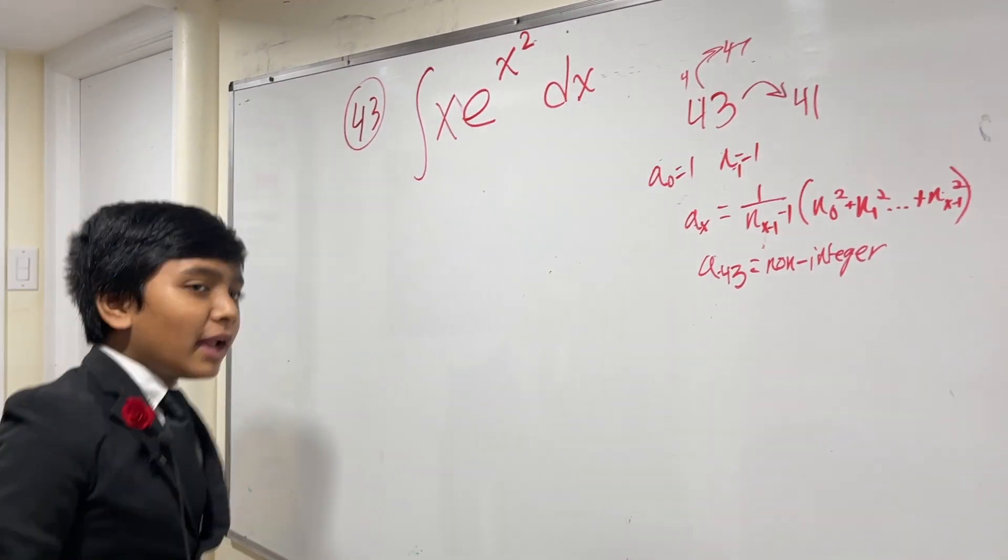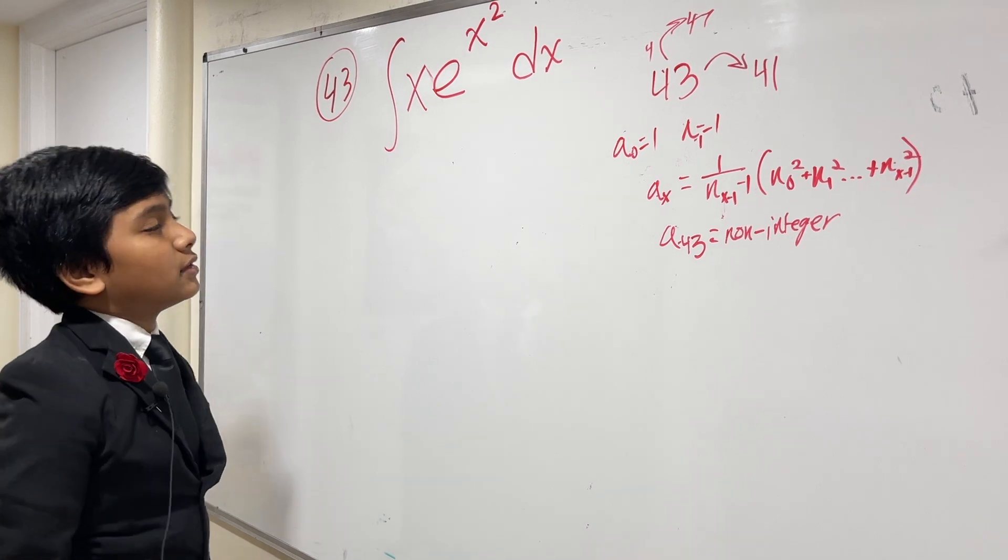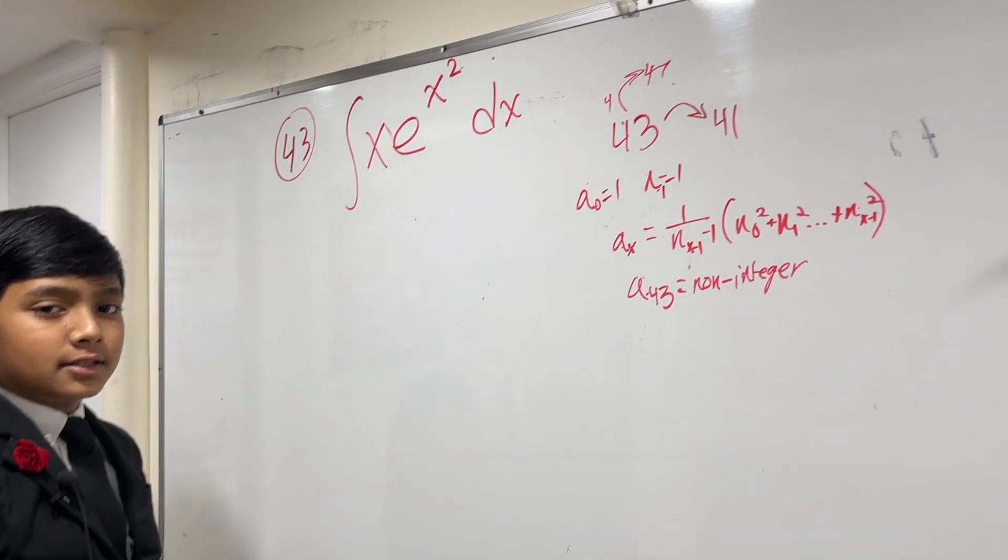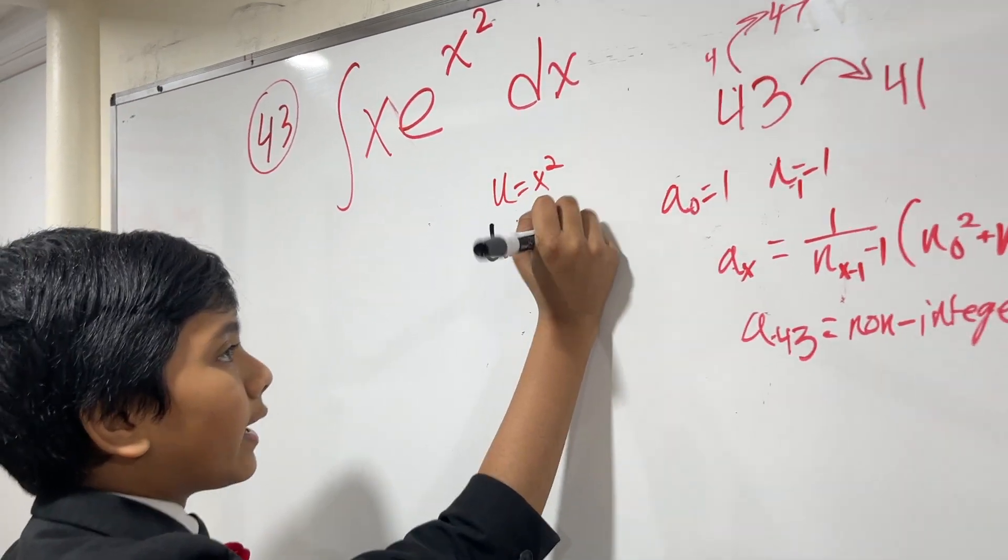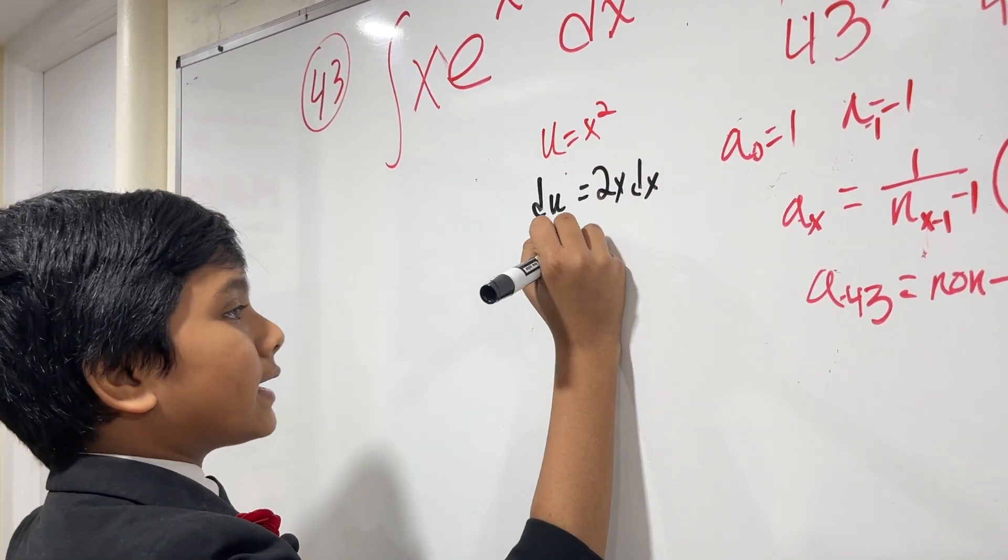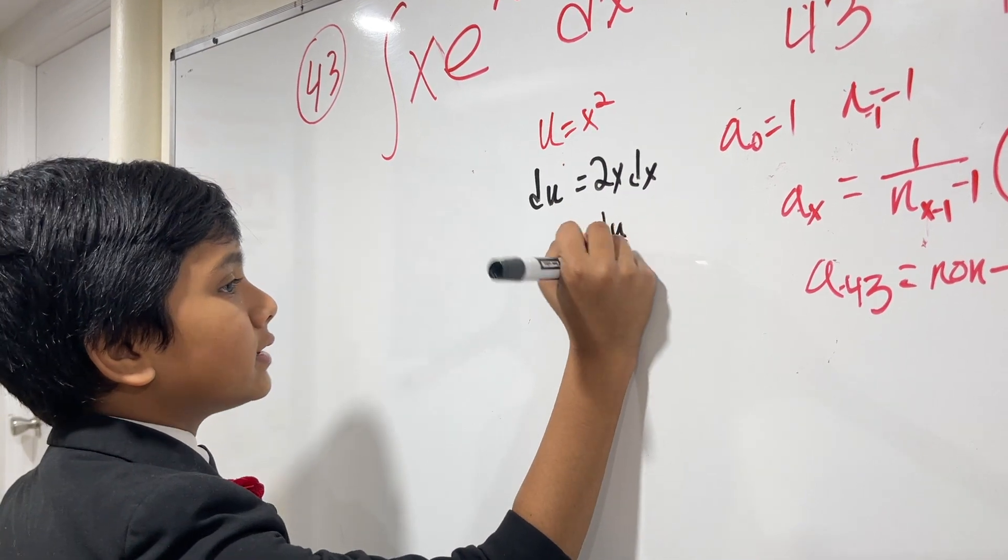Okay, so now, here we have, are you kidding me, it's another u sub. du is equal to 2x dx, thus dx is du over 2x.